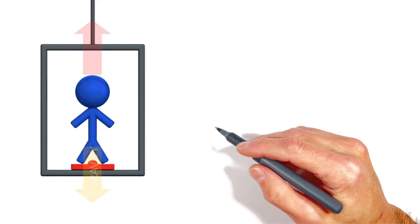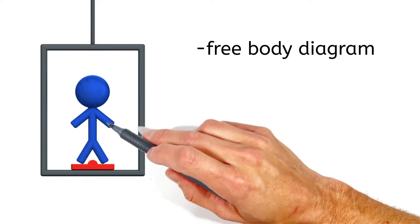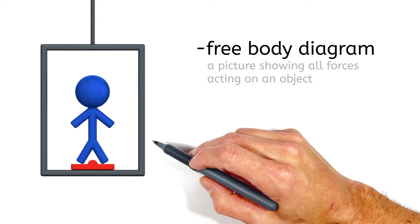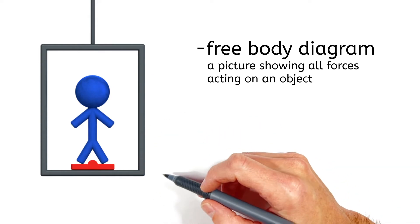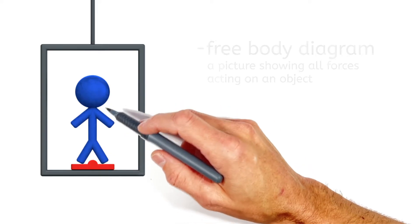So the first thing we need to do here is look at the free body diagram for a person in this elevator. A free body diagram is just a picture showing all the individual forces acting on an object.